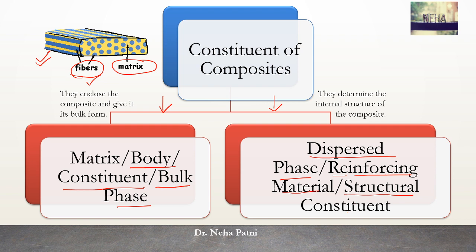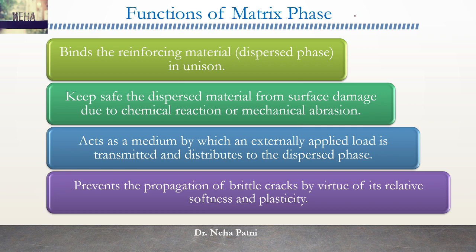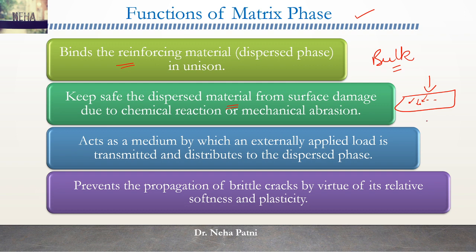The dispersed phase also provides structure to the major product, so they are also known as structural constituent. The composite compulsorily will have a matrix, because that is the bulk form and the major enclosure of the composite. The dispersed phase determines the internal structure of the composite. The matrix phase binds the entire material, keeps the dispersed material safe from damage, acts as a medium by which the applied load is transmitted and distributed equally to all dispersed phase.